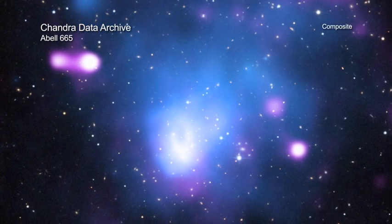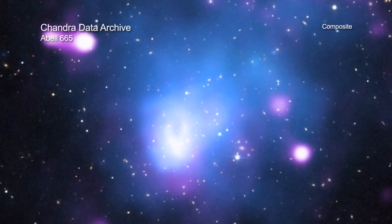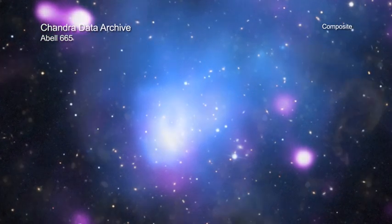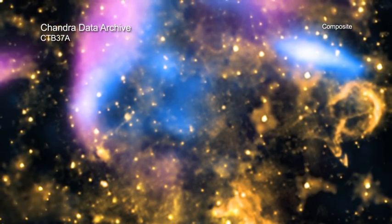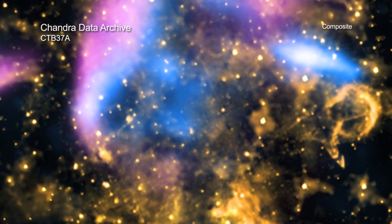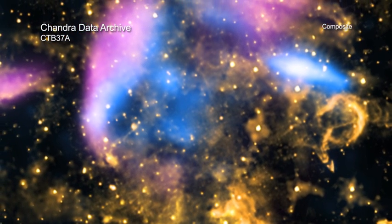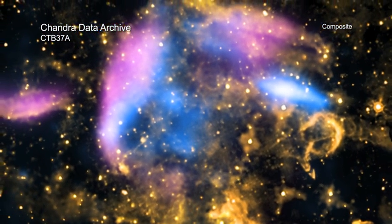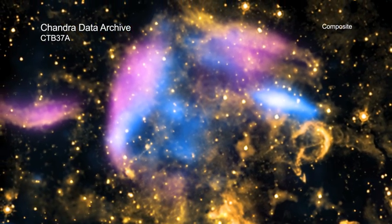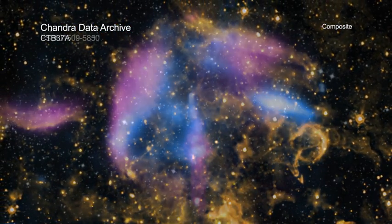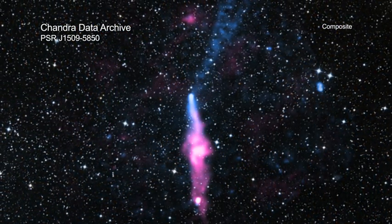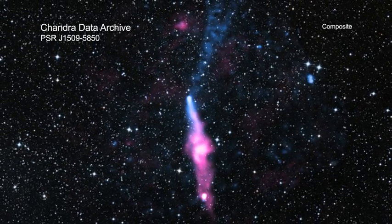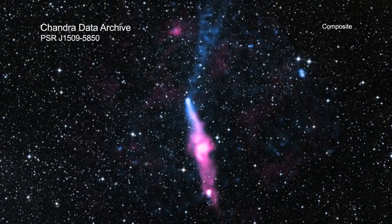The Chandra Data Archive is a sophisticated digital system that ultimately contains all of the data obtained by the telescope since its launch into space in 1999. Chandra's Archive is a resource that makes these data available to the scientific community and the general public for years after they were originally obtained.